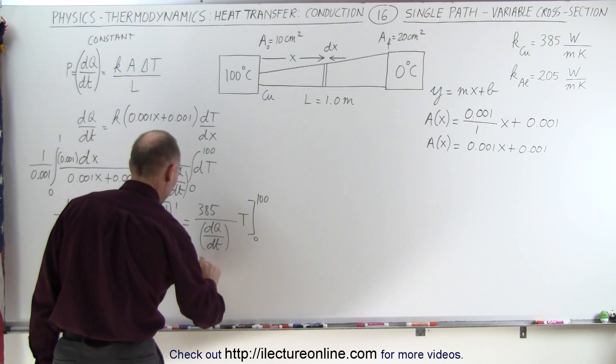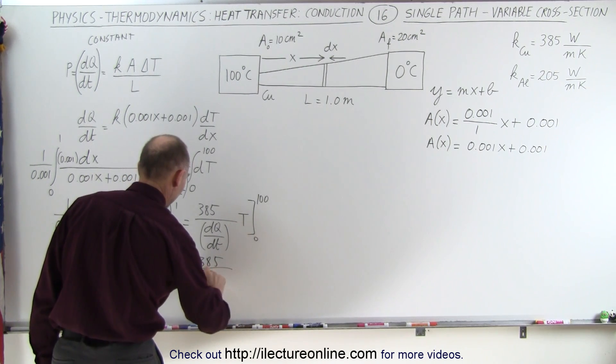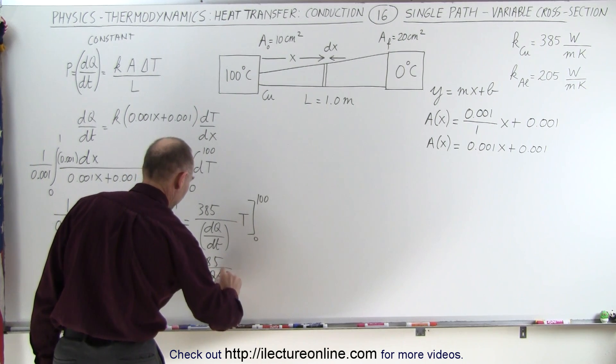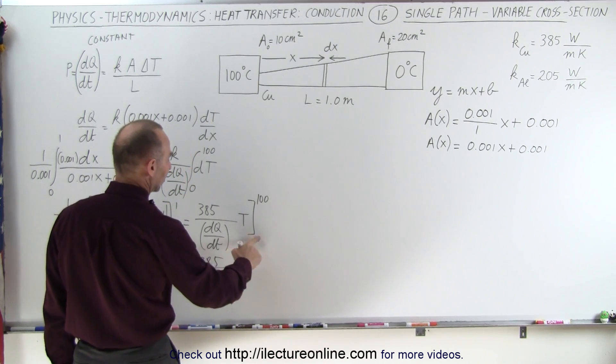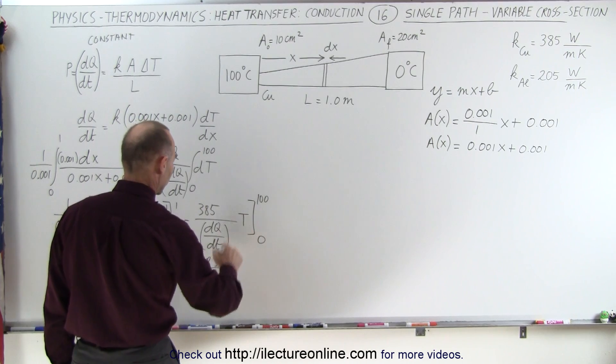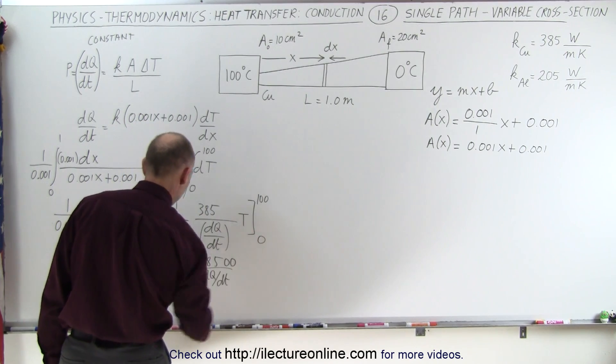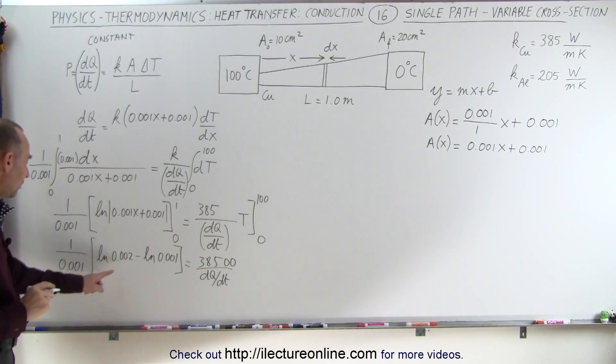On the right side, we get 385 divided by dQ/dt times 100, because when plugging in the lower limit, we get 0. Plug in the upper limit, we get 100.